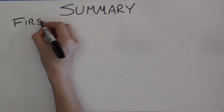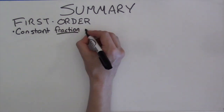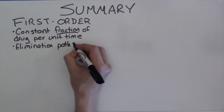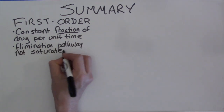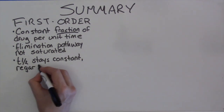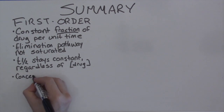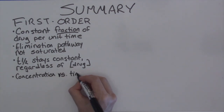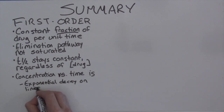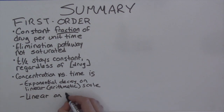To summarize: for first-order elimination, a constant fraction of the drug in the body is eliminated per unit time, because the elimination pathway is not saturated. The half-life — the time needed to eliminate half of the drug — stays the same regardless of the concentration. When plotted on an arithmetic scale, the concentration versus time plot is an exponential decay curve. When the y-axis is on a logarithmic scale, the graph is a straight line.